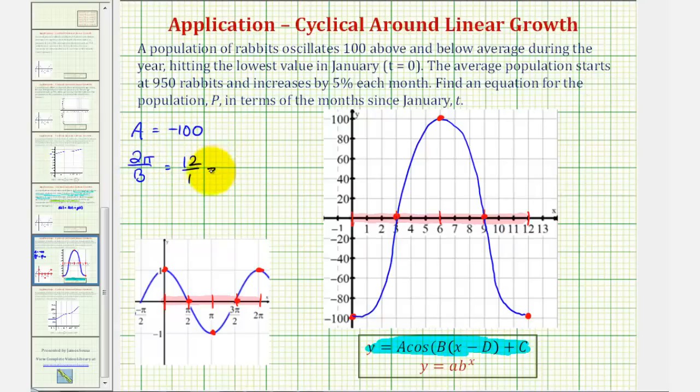So we can cross multiply or multiply both sides of the equation by b. That would give us 12b equals two pi. Dividing both sides by 12, we have b equals pi divided by six.